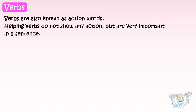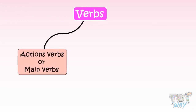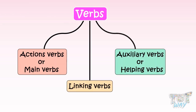Now we will learn about various types of verbs according to the functions they perform in a sentence. There are three types of verbs: action verbs, also called main verbs; linking verbs; and auxiliary verbs, also called helping verbs.